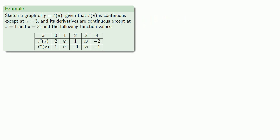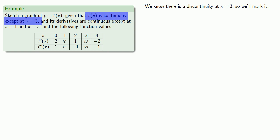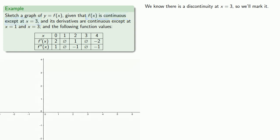To begin with, we know there's a discontinuity of some sort at x equals 3, so we'll mark it. Because our graph is discontinuous at x equals 3, we'll want to indicate that we cannot cross this line at x equals 3. So we'll draw a red dashed line as a reminder: do not cross this line.